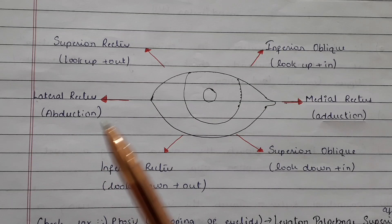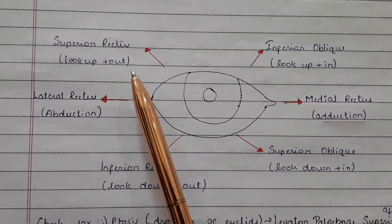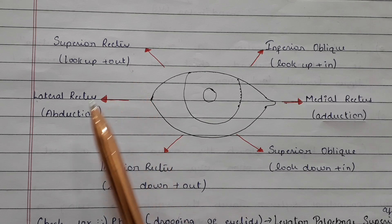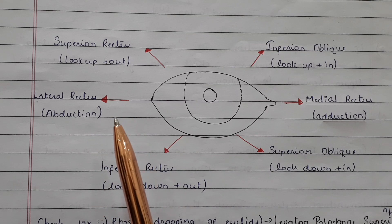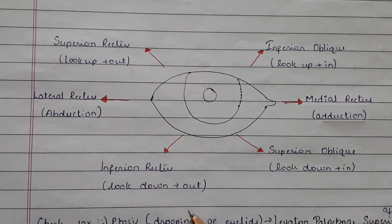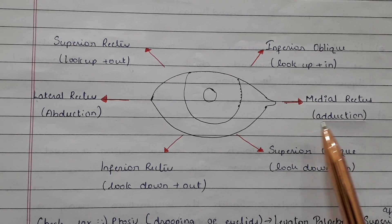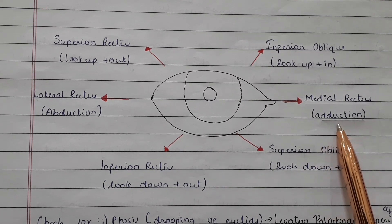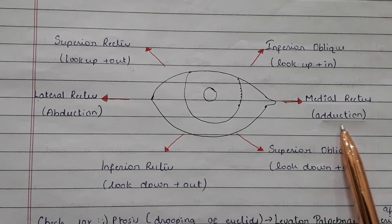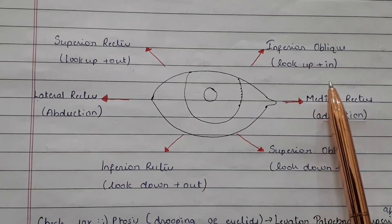The six different directions include: look up and out, controlled by the superior rectus; move the eye away from the opposite eye, controlled by the lateral rectus; look down and out, controlled by the inferior rectus; look down and in, by the superior oblique; look towards the opposite eye — adduction — done by the medial rectus; and look up and in by the inferior oblique.